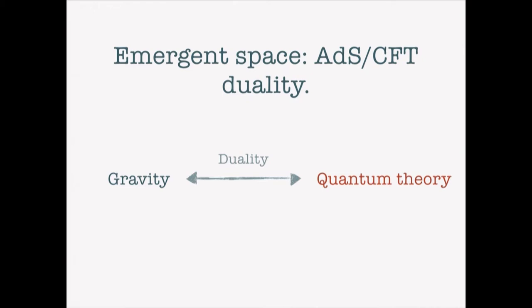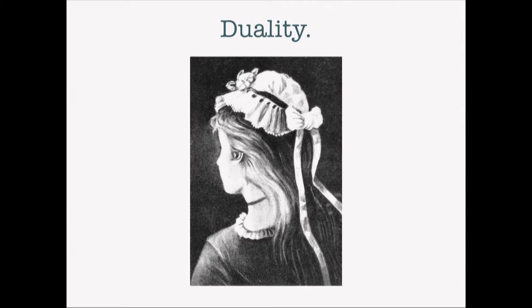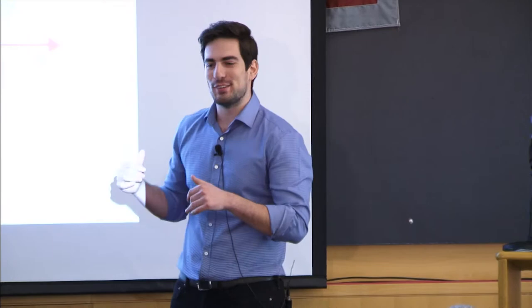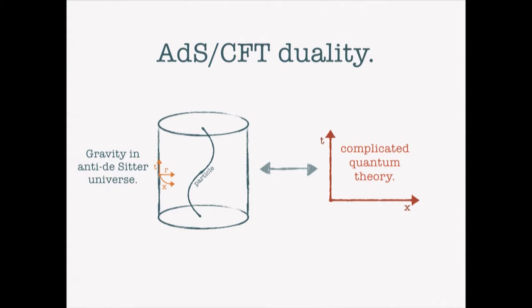Theoretical physicists like toy models, and here's the toy model of emergent space we have at hand — it's called ADS-CFT duality. In one line, it's an equivalence between a gravity theory and a quantum mechanical theory. Think of duality like a picture with two interpretations: one reveals an old lady, another a young lady — two different ways of interpreting the same single physical content. Similarly in ADS-CFT, two seemingly very distinct mathematical theories have identical physical content.